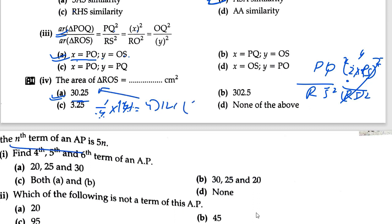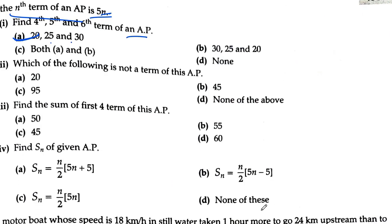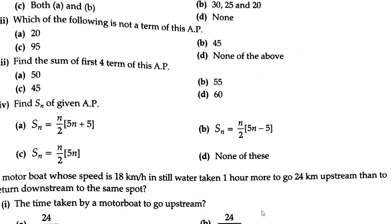Question 24: the 10th term of AP is 5 — find the 4th, 5th, and 6th terms. The first term, if you find out, will be 20, 25, and 35. Which of the following is not a term of this AP? The clear fact is: all terms are in the form 20, 25, 30, 35, 40, 45, 50 — a multiple of 5 situation.